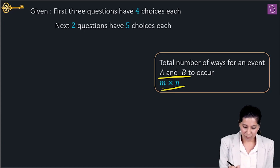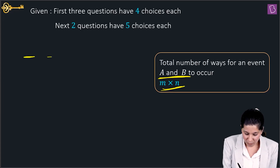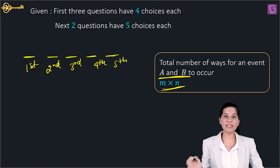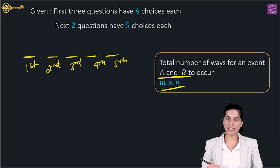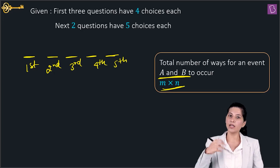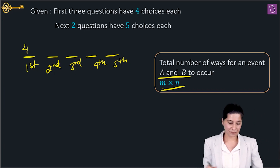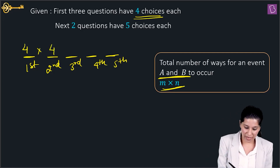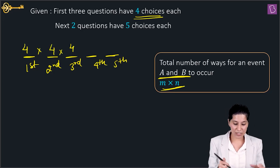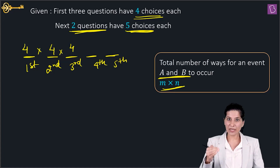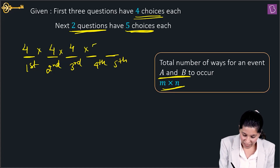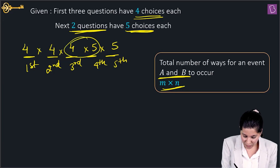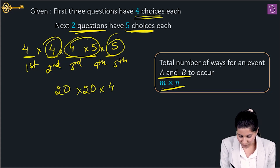Let's solve it. There are 5 questions, so I'll make 5 blank spaces. For the first question, there are 4 choices: A, B, C, D. Same for the second and third questions — 4 choices each. For the last two questions, there are 5 choices each. So multiplying: 4 × 4 × 4 × 5 × 5.